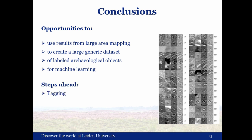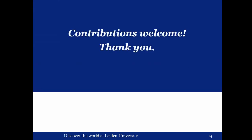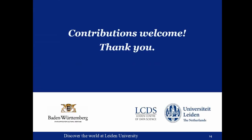To conclude, doing this work gives us the opportunity to use the results from my large-area mapping efforts to create a large generic dataset of labeled archaeological objects for machine learning purposes. The steps ahead will be to continue tagging — and it would be nice to have some help there — expand to more classes of objects like burial mounds, and then consolidate the dataset and distribute it. Contributions in terms of time for tagging or even data donations are very welcome.